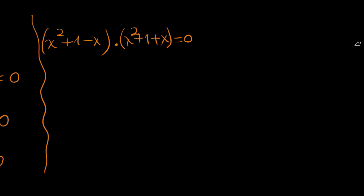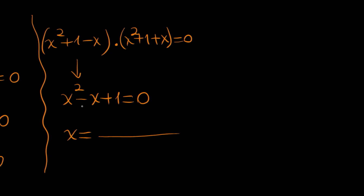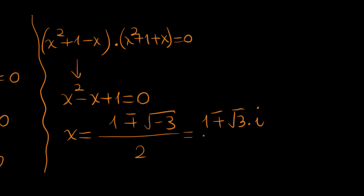We now have two quadratic expressions. The first is x squared minus x plus 1 equals 0. Using the quadratic formula: x equals 1 plus or minus the square root of 1 minus 4, which is negative 3, all divided by 2. This simplifies to 1 plus or minus root 3 times i, divided by 2.